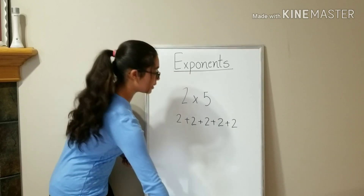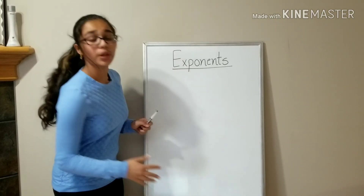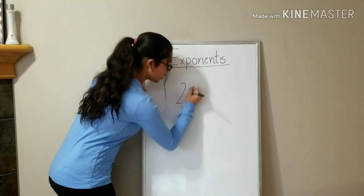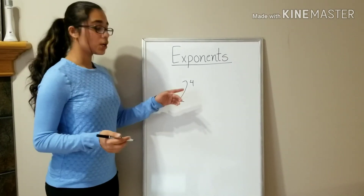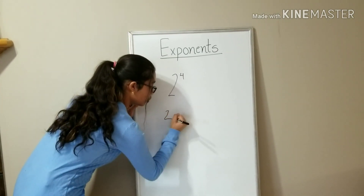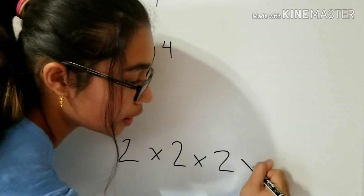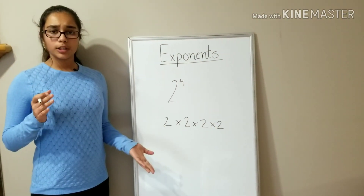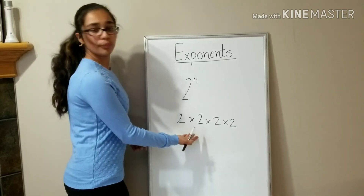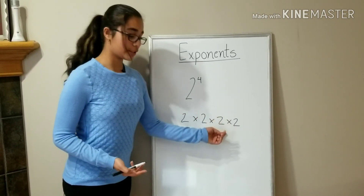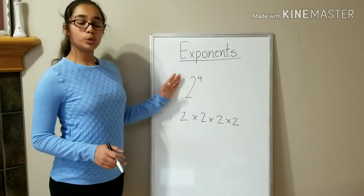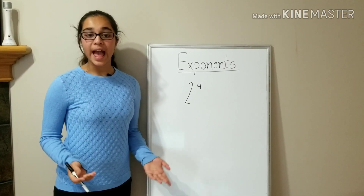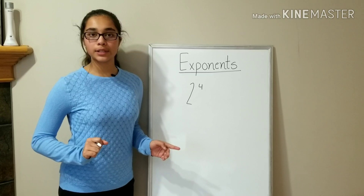Then how does that connect to exponents? Because in exponents, we're multiplying a number a certain number of times — so it's a large expression that we're making smaller to look at. For example, if we have the exponent 2 to the 4th power, that means 2 times 2 times 2 times 2. 2 times 2 is 4, 4 times 2 is 8, and 8 times 2 is 16. So 2 to the 4th power equals 16. That's why it's just like repeated multiplication — multiplication shows repeated addition and exponents show repeated multiplication.